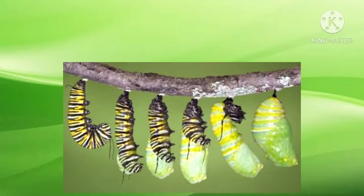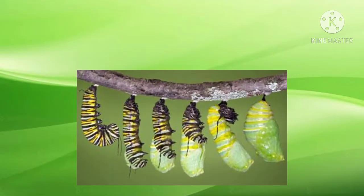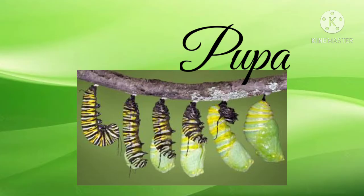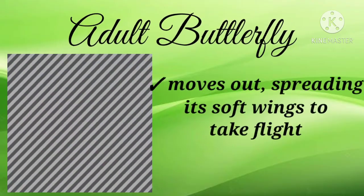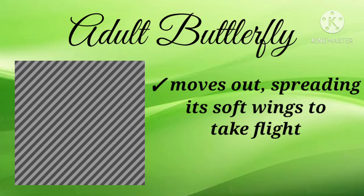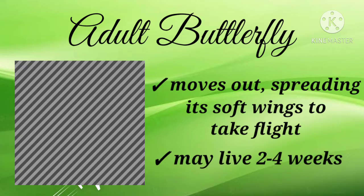On the last molting stage of a larva, it stops eating and growing and begins to attach itself to a suitable place to change into a pupa. A hard covering called chrysalis is made to wrap itself. With all changes complete inside the chrysalis, an adult butterfly moves out, spreading its soft wings to take flight. An adult butterfly may live for two to four weeks.